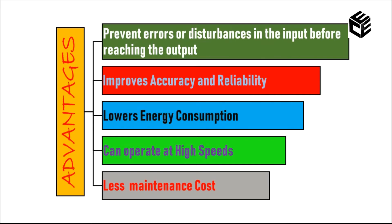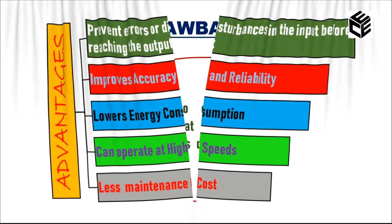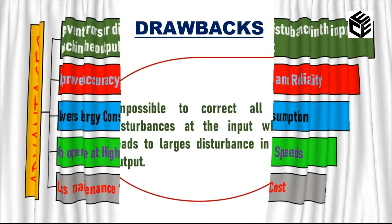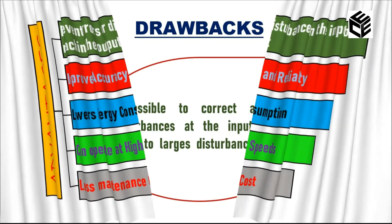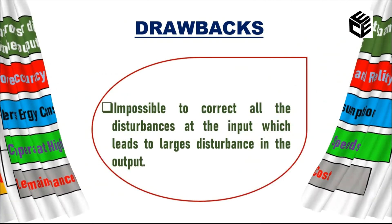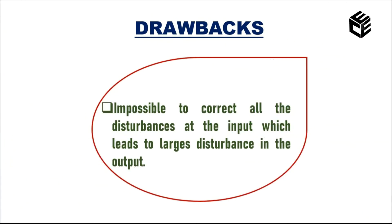Now let's see the drawback of the feedforward system. It has only one drawback: if the disturbance occurs at the output side and is beyond the limit or out of control, we cannot make alterations to correct the disturbances at the input side.